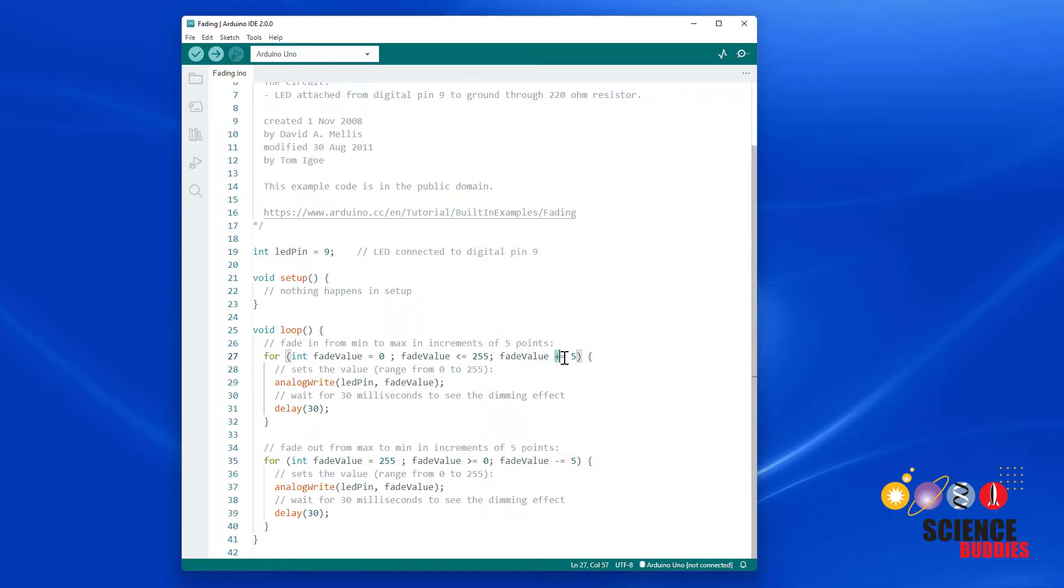If you're confused by these plus equals and minus equals operations, that is a shorthand notation in the programming language. That is the same thing as writing, for example, fade value equals fade value plus five. So on each iteration through the loop, it's going to add five to the previous value of fade value. This is the same thing, it just takes longer to write. But if you find this notation confusing, it is perfectly fine to replace that with fade value equals fade value minus five and fade value equals fade value plus five. These are equivalent, it just takes a little longer to write, so some people prefer the shorthand notation.